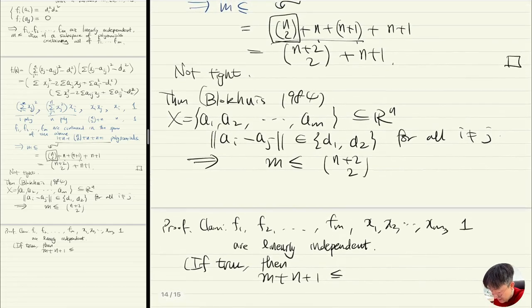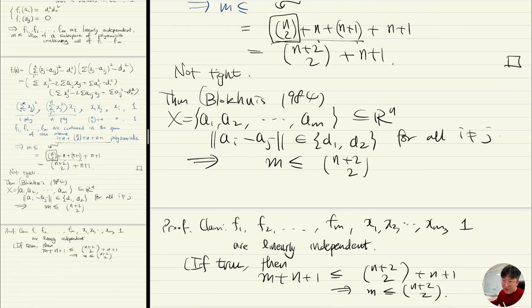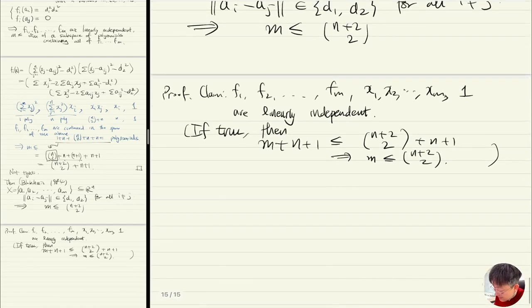If this is true, then m + n + 1 ≤ dimension of the span, and all of them are contained in the span of the original basis, so this is at most C(n+2,2) + n + 1, which implies m ≤ C(n+2,2). So we have f_1,...,f_m and we add a few extra polynomials which still preserve linear independence, giving us the improved bound.